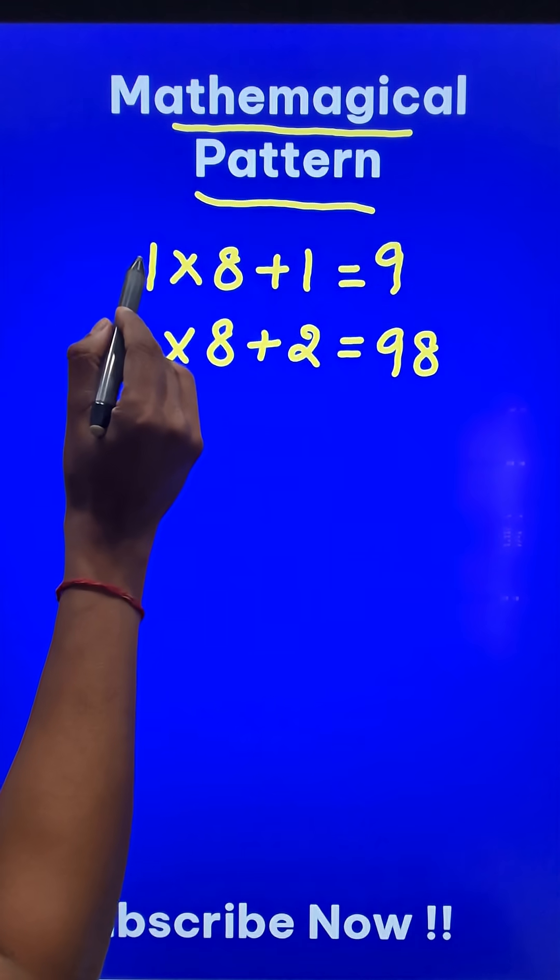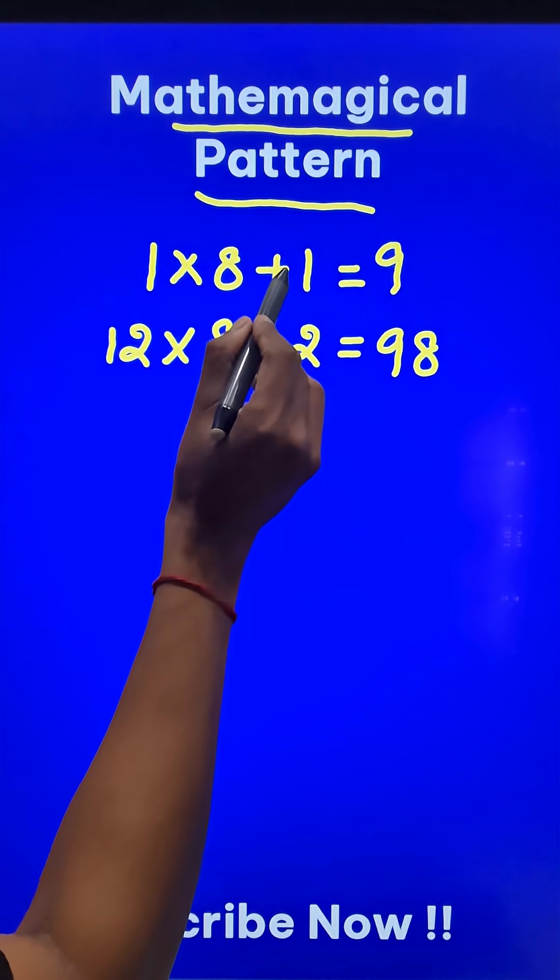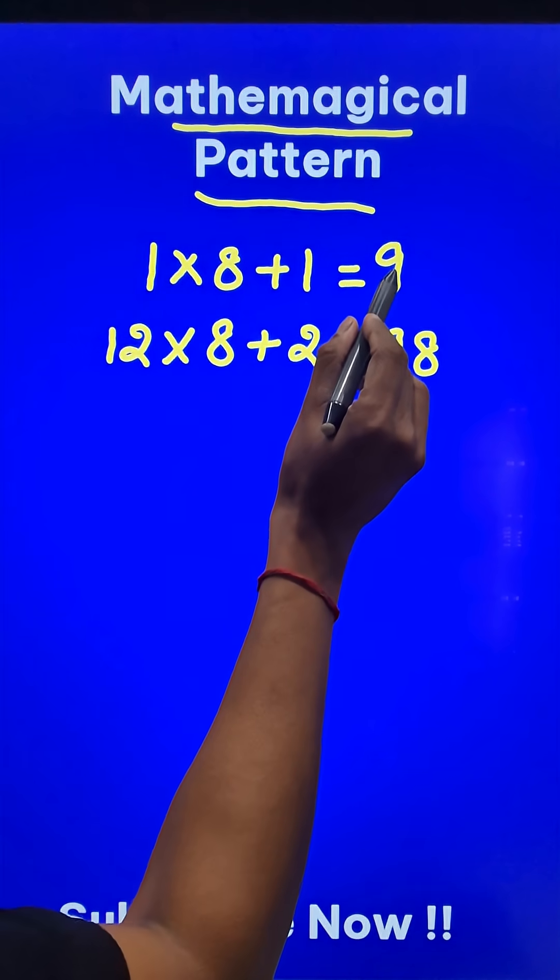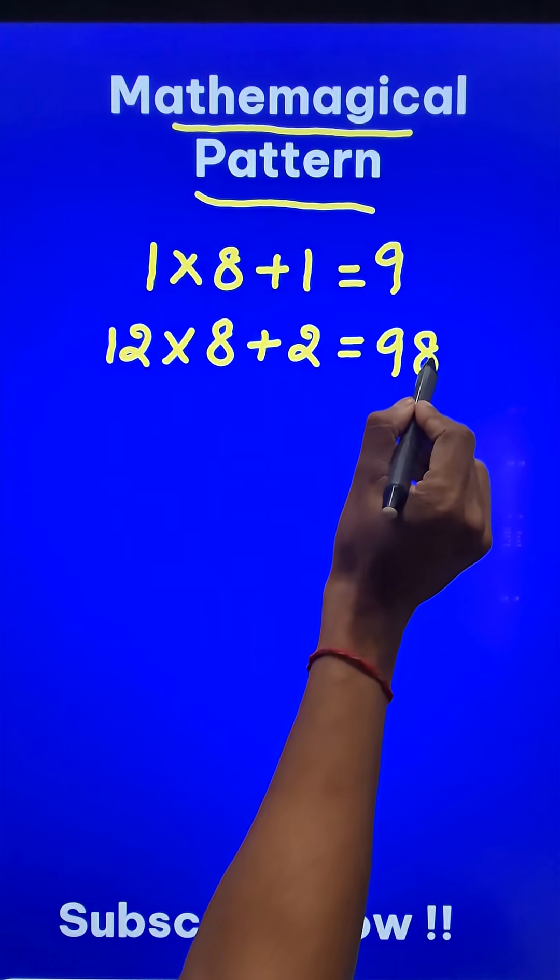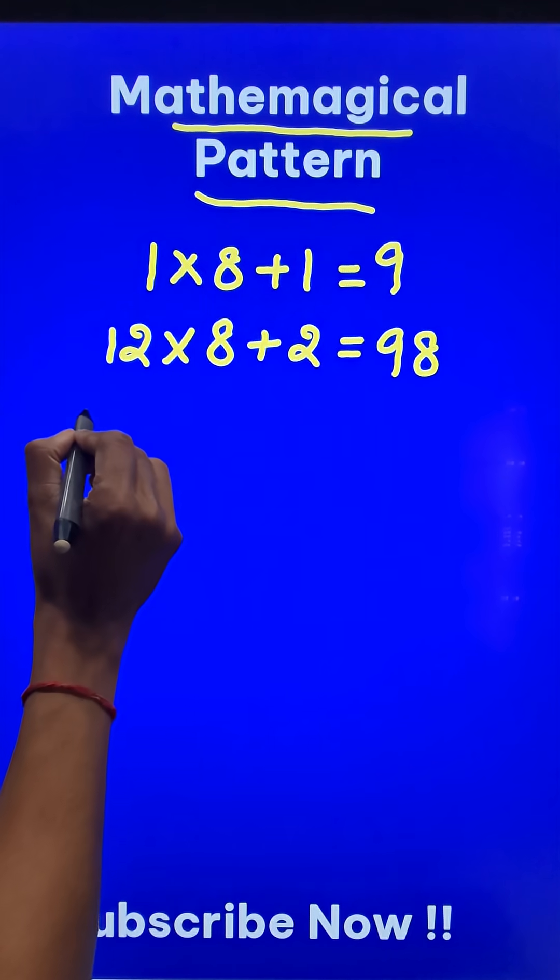So when we suffix one more number, 2, and increase this by 1, then the next number before 9, which is 8, also comes in. Does it follow the pattern now? Let's check.